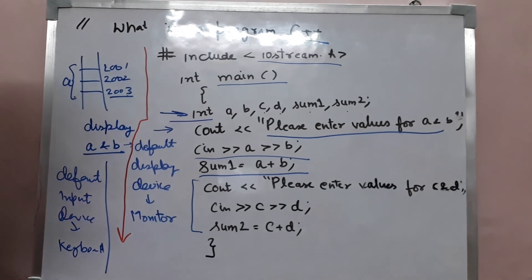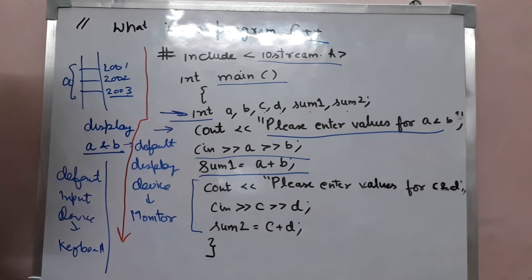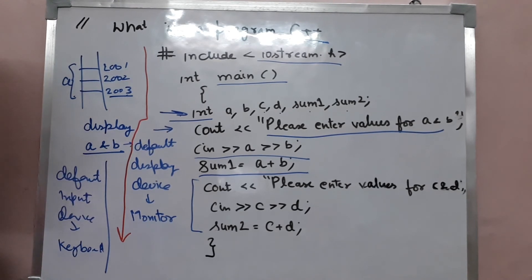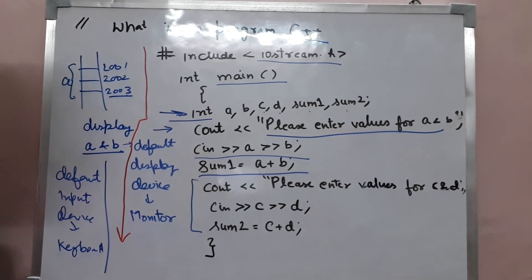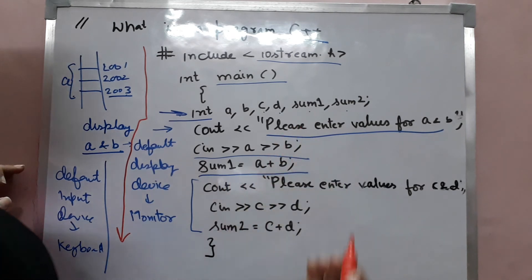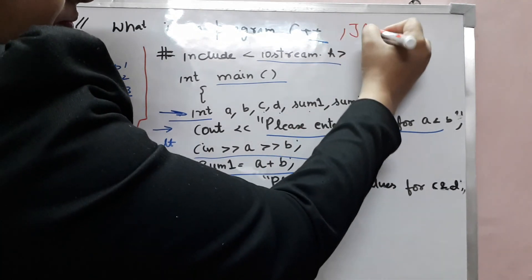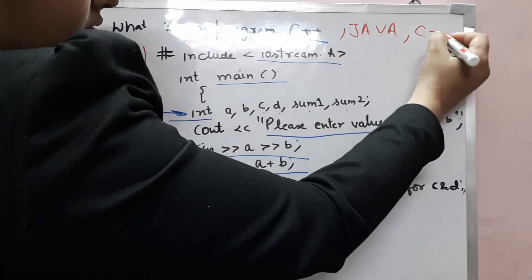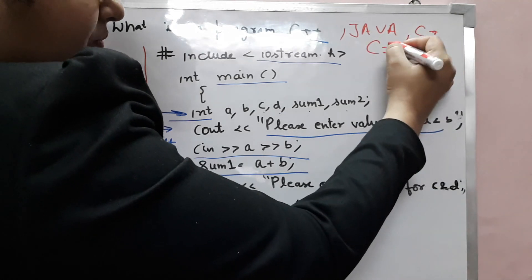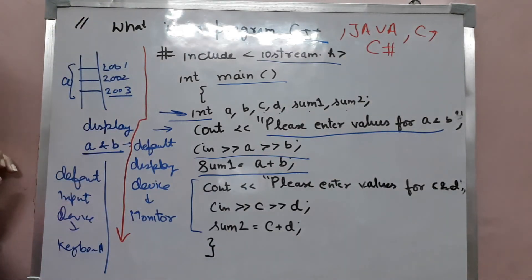To program computer, we require programming languages. Some of the programming languages are C, C++, Fortran, Java, C# and so on. Thank you friends.